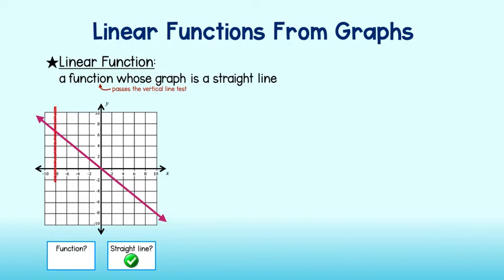Let's draw a few lines. As you can see, all of the vertical lines drawn here pass through one point on the graph, so it is a function. Since it is both a straight line and a function, this graph does represent a linear function.